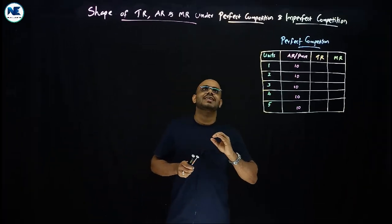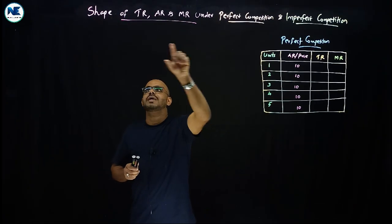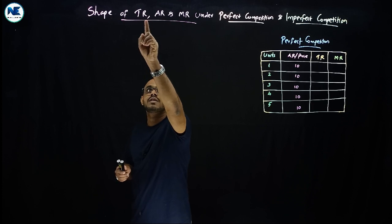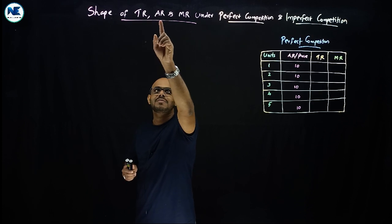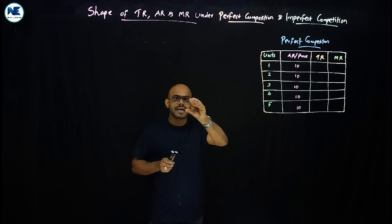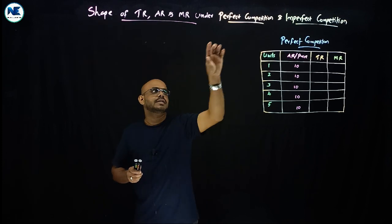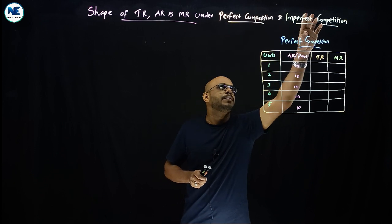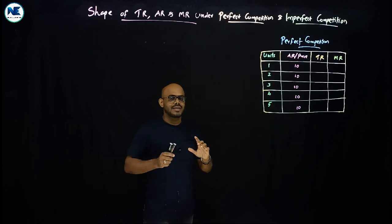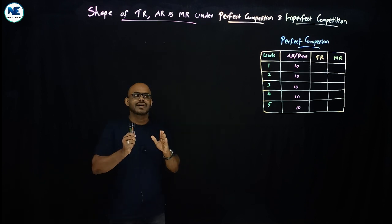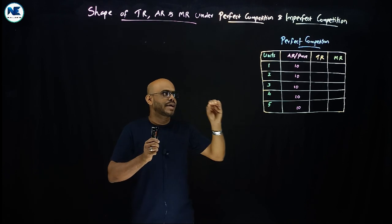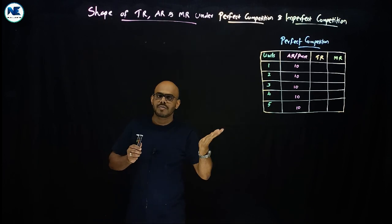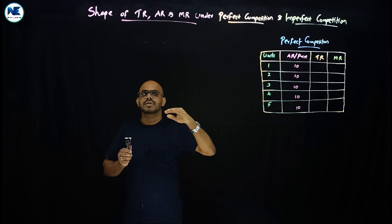Hello friends, welcome back. Our topic is the shape of total revenue curves, average revenue curves, and marginal revenue curves under perfect competition and also under imperfect competition. The key areas are AR, TR, and MR — their relationship and diagrammatic analysis.